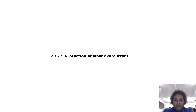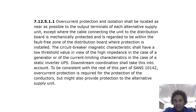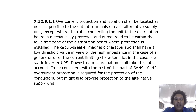Overcurrent protection and isolation shall be located as near as possible to the output terminals of each alternative supply unit, except where the cable connecting the unit to the distribution board is mechanically protected and is regarded to be within the fault-free zone of the distribution board. The circuit breaker magnetic characteristic shall have a low threshold value in view of the high impedance in the case of a generator, or the current-limiting characteristics in the case of a static inverter UPS. Downstream coordination shall take this into account; overcurrent protection is required for the protection of conductors but might also provide protection to the alternative supply unit.